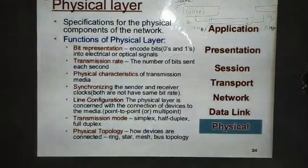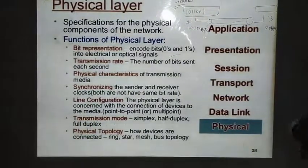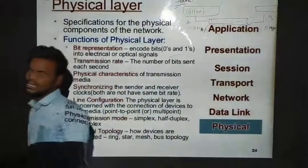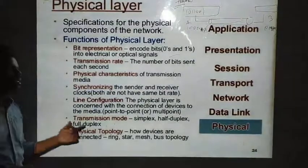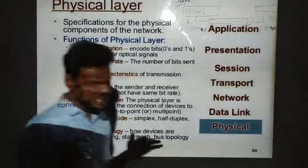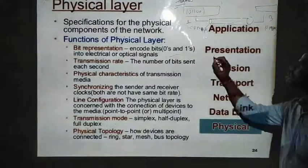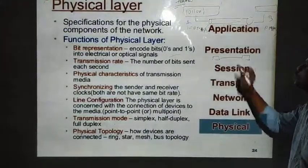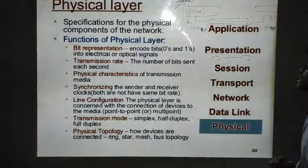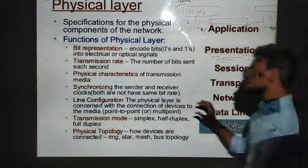The physical layer is responsible for line configuration — how we are going to connect systems. Whether we connect systems in a point-to-point manner or in a multipoint manner is determined here. Point-to-point configuration is when two systems are connected with a dedicated line. When multiple systems need to be connected, we use a multipoint connection.